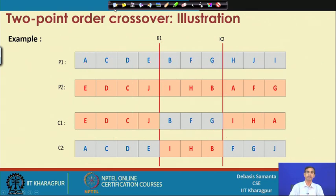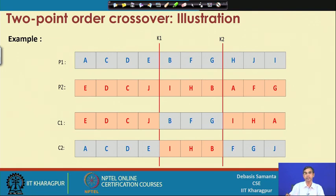The two-point crossover is a little more complex than single-point crossover, but it gives better diversity in the chromosome solution and is more preferable. However, it is a slightly more costly operation than single-point crossover.